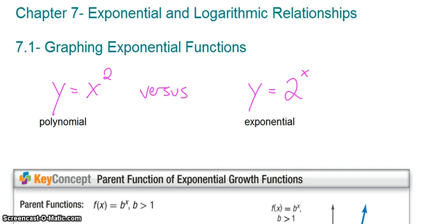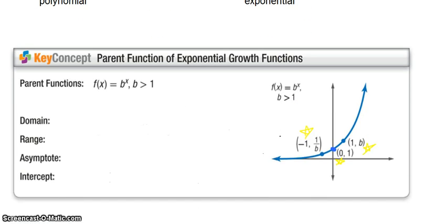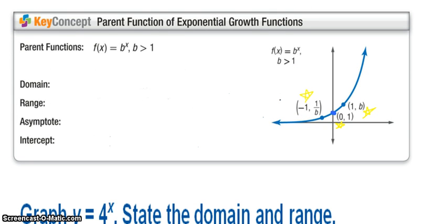These will behave quite differently, so let's take a look at the parent function of an exponential growth. I'll know whether I have a growth or decay based off of my b value. If my b is greater than 1, I know I have a growth. For example, that one that we just saw above, 2 to the x, is an example of a growth.